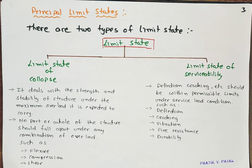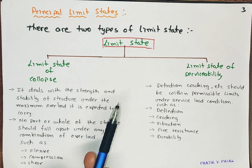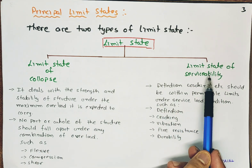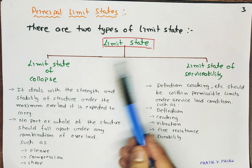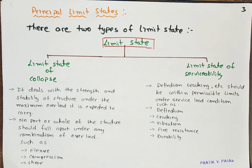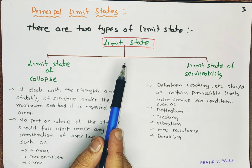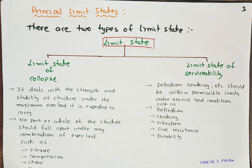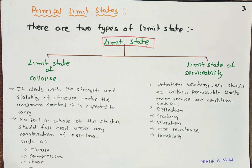Hello friends. In the second part of the design of reinforced concrete structures, we will understand the two types of limit state — that is, limit state of collapse and limit state of serviceability. These are basically the two parts of the limit state method, which we understood previously.